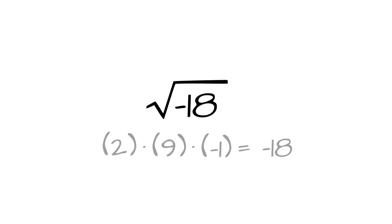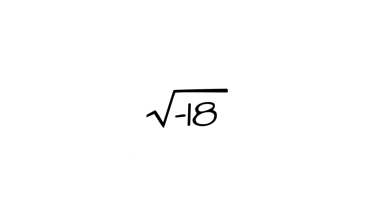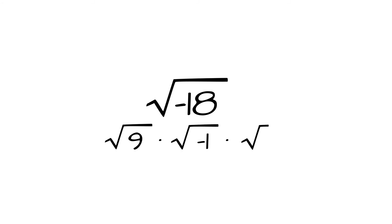On this example, let's save some time by being more intentional with the order we write our factors. The square root of negative 18 is the square root of 9 times the square root of negative 1 times the square root of 2. Notice, we put the perfect square in the front, the negative 1 next, then the remaining factor last. This will help save us some work.